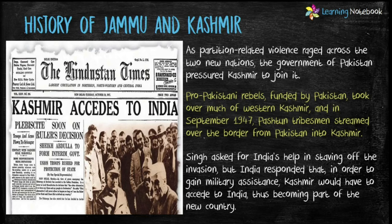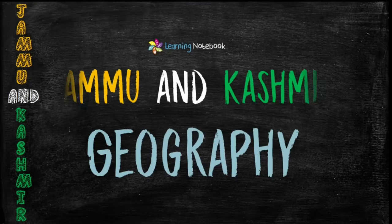After that, Singh asked for India's help in staving off the invasion, but India responded that in order to gain military assistance, Kashmir would have to accede to India, thus becoming part of the new country India. Now let's learn about the geography of Jammu and Kashmir.